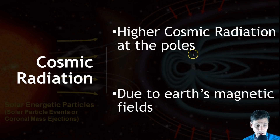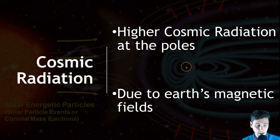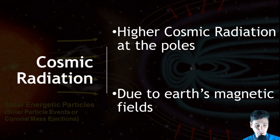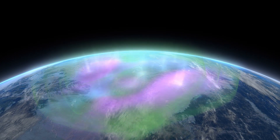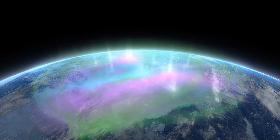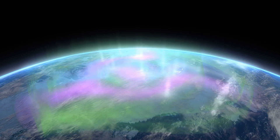Charged particles are directed such that they preferentially come in towards the poles of the earth, because that's where the magnetic field lines direct them. If they try to enter right at the equator it's much more difficult, whereas if they come in towards the poles it's much easier to penetrate the earth's magnetic field. That's the reason why cosmic radiation is higher at the poles. A pretty cool feature of this is a phenomenon called the auroras — like the aurora borealis.